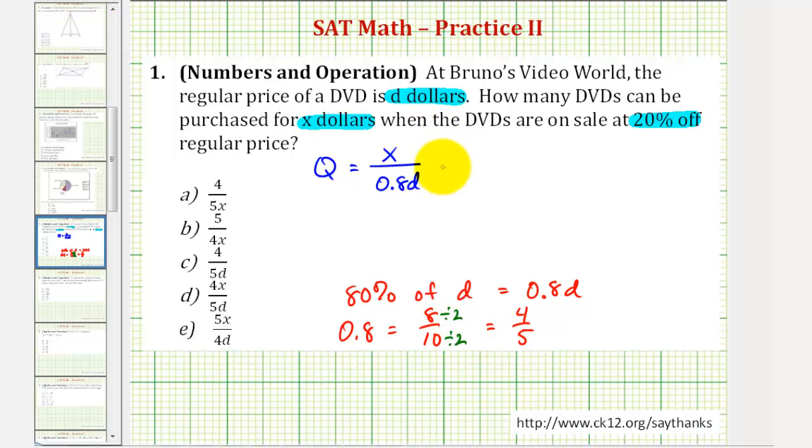So we can write the given quotient as a complex fraction or X divided by four fifths times D or if we want four D divided by five.